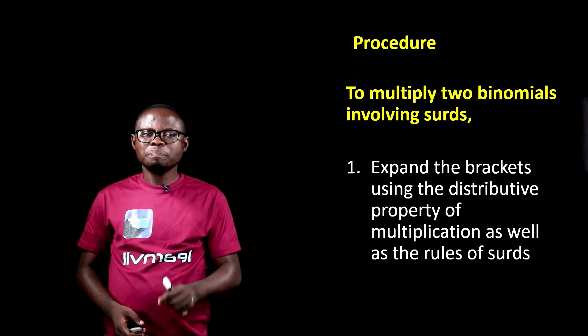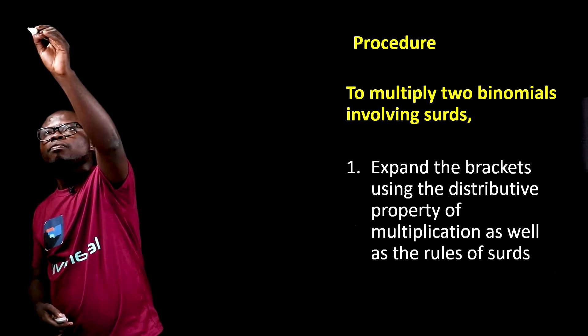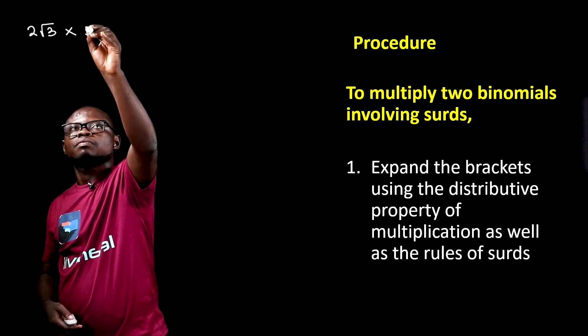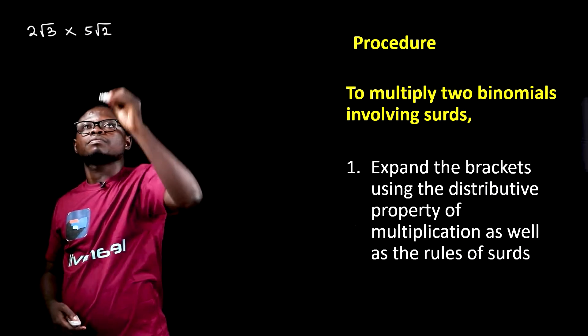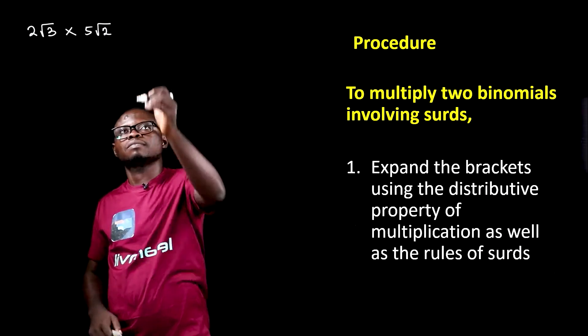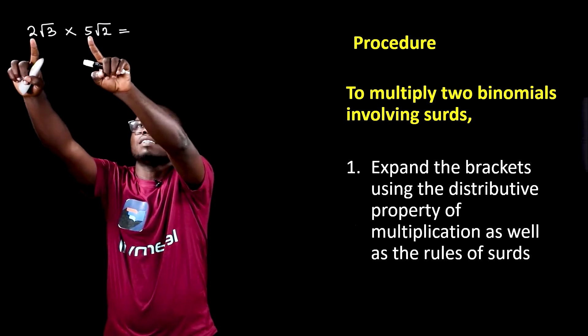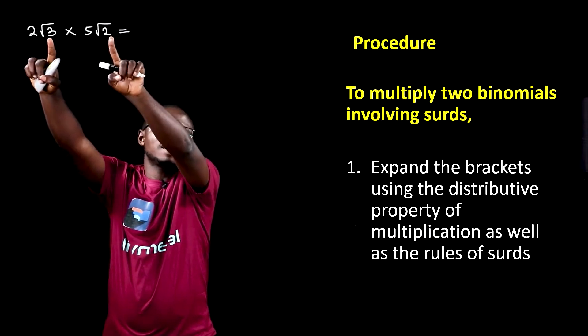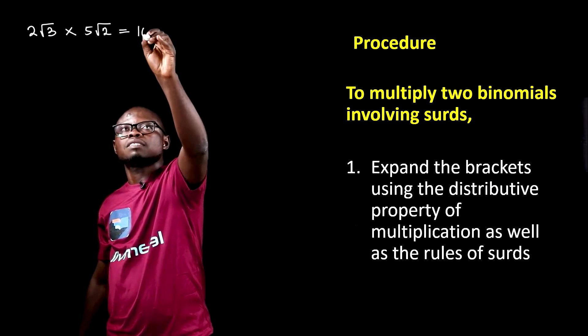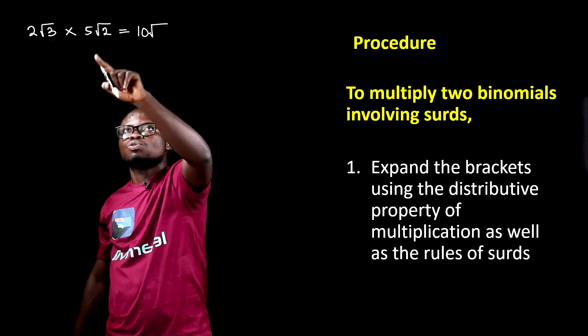We'll look at the very basic ones before we go to binomials. We looked at the multiplication rule, which says that if we have a surd multiplied by a surd, we should multiply the outsides together and then multiply the insides together. So in this particular example, we're going to have 2 times 5, that gives us 10. Root 3 times root 2, 3 times 2, and then we get 6.